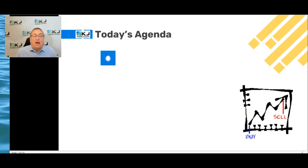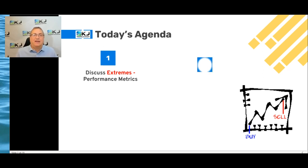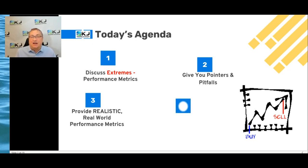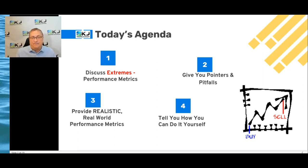Today we're going to talk about performance metrics that are what I call extremes. I'm also going to give you some pointers, pitfalls, and tips as we go along discussing these numbers. I'm going to show you some realistic results and realistic numbers so you can gauge your own strategy development and see if you're in the range of what I'm doing. And finally, I'm going to tell you how you can do it yourself.